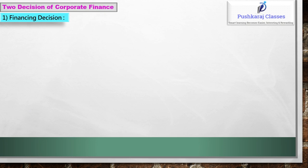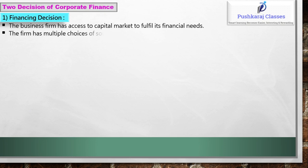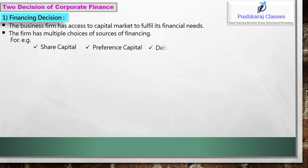Financing decision: The business firm has access to the capital market to fulfill its financial needs. The firm has multiple choices of sources of financing — for example, share capital, preference capital, debenture, trade credit, bill discounting, and long, medium, short-term loans.